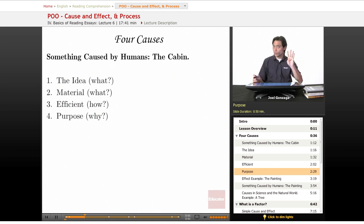So we have four causes. Here's how we think about them: The idea is a what question. The material is also a what question. Efficient is always how did the material become the effect. The purpose is, why bother at all?